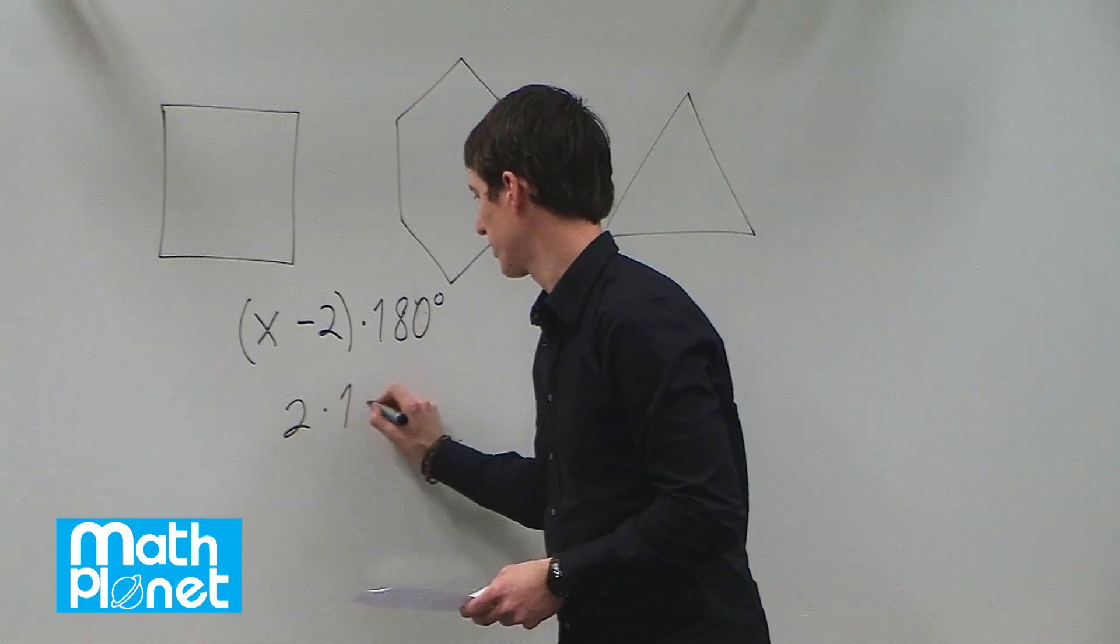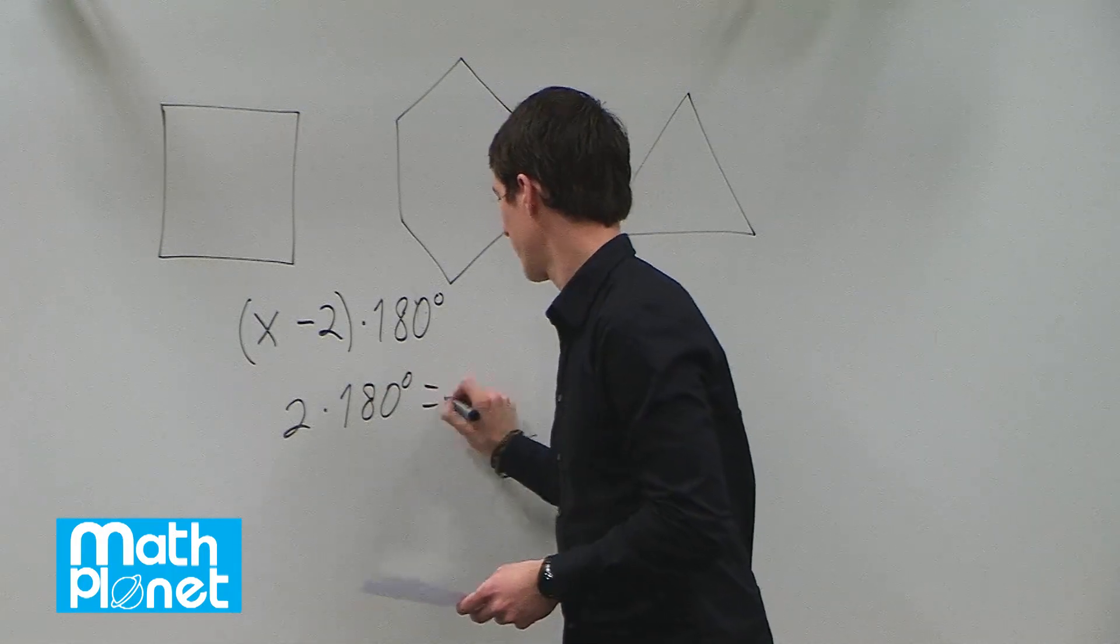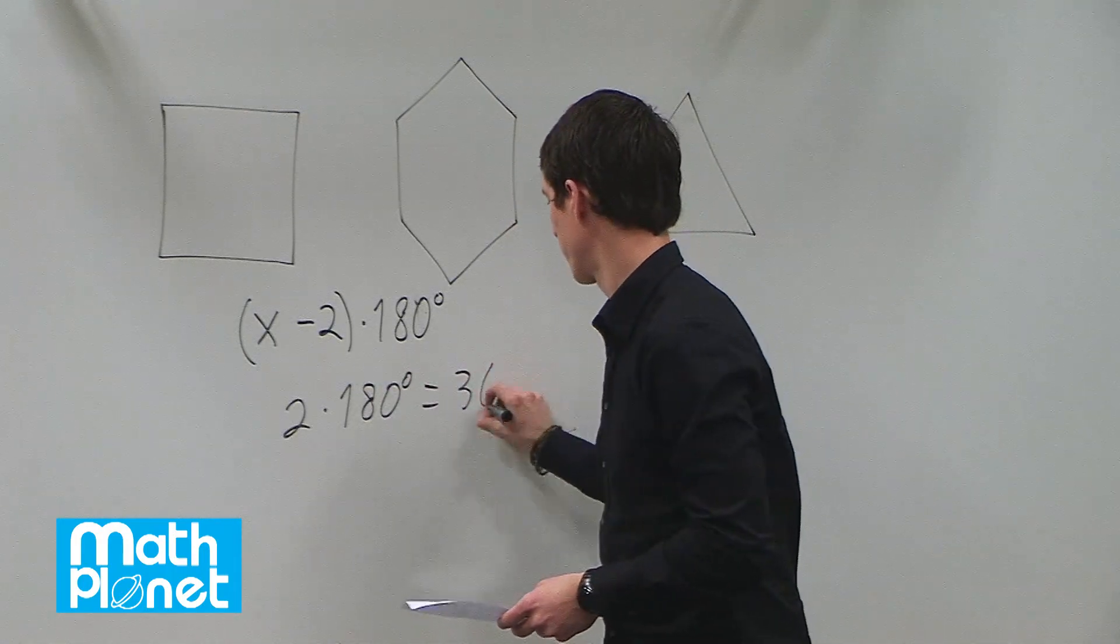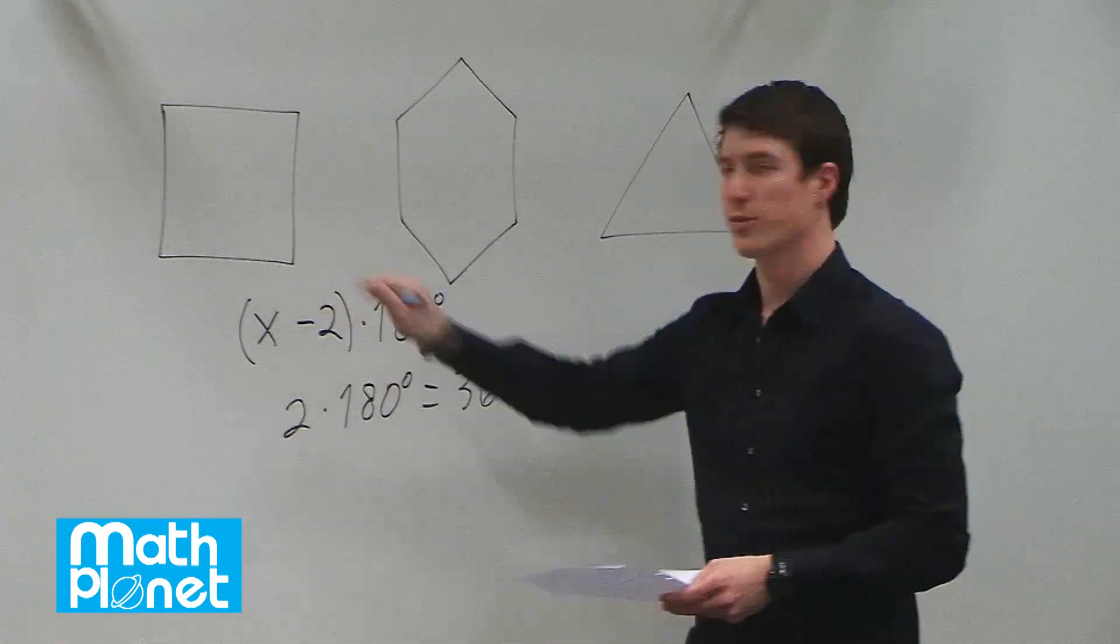So two times 180 gives us 360 degrees. So that's for this square.